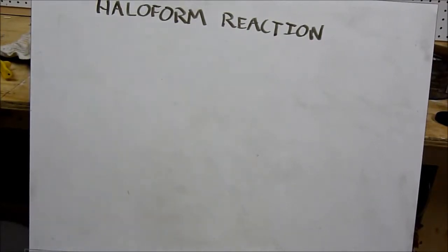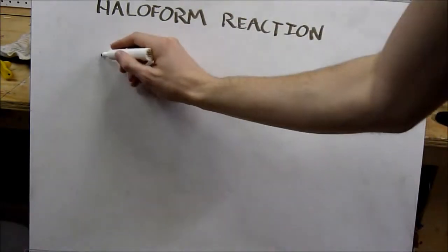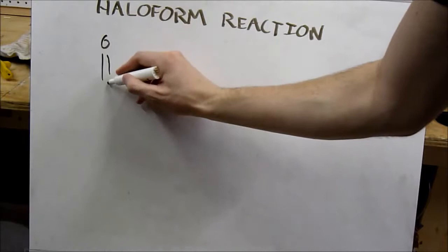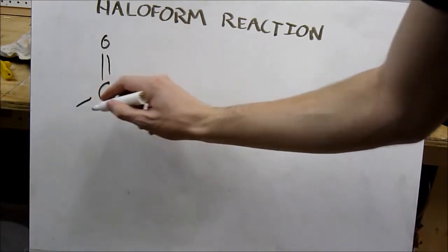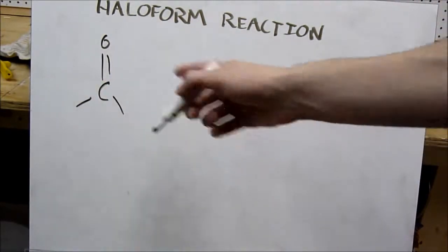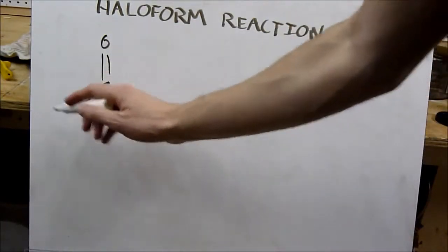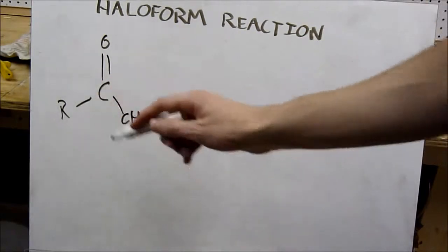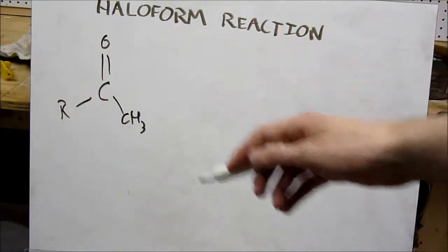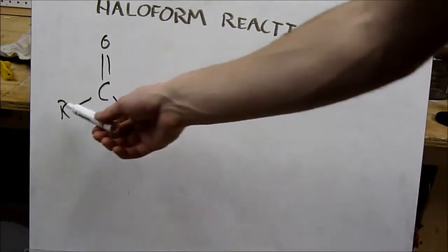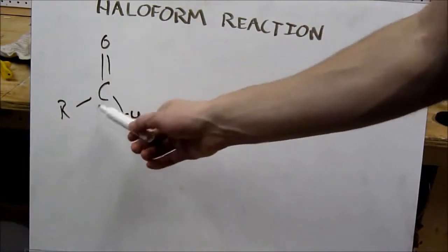While we're waiting, I decided to teach a little bit about the haloform reaction based on what I know. The haloform reaction works by forming haloforms from ketones, specifically methyl ketones. A ketone has a double bonded oxygen to a carbon with two groups attached to it. A methyl ketone will have at least one methyl group, CH3. If I had another methyl here, this would be dimethyl ketone, aka acetone.